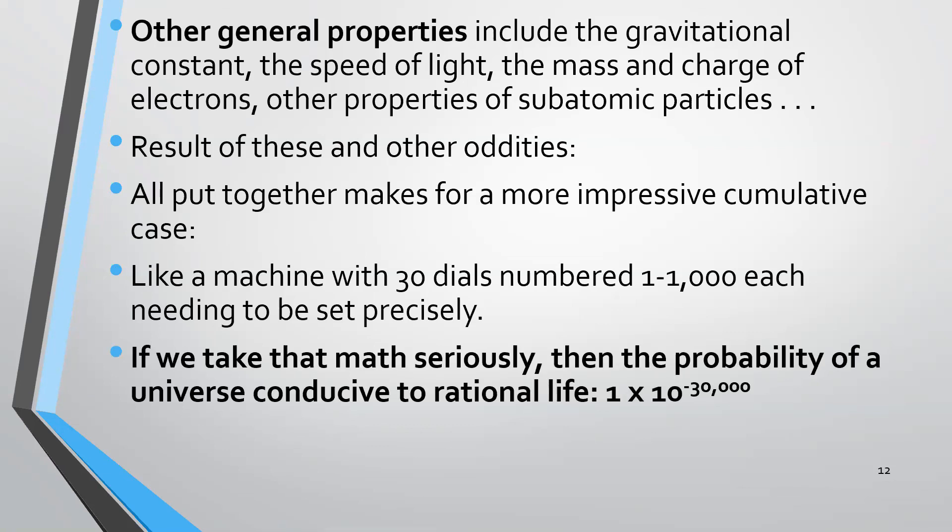If we take that math seriously, then the probability of a universe conducive to rational life, conducive for there being organisms like us humans, the probability would be 1 times 10 to the negative 30,000. It is more likely, by far more likely, that you would win a Powerball lottery after buying one ticket 10 times in a row consecutively, which obviously somebody would conclude that that was fine-tuned. In other words, you were cheating, something is going wrong. You wouldn't get any payouts after doing that after two or three times, because everyone knows that something's up. We'll explore those odds, probabilities, criticisms, more in the video on criticisms and responses to the contemporary design argument. You can watch that video next for more information.